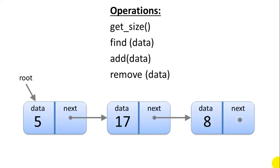Some of the operations we want to do on our linked list: get size, find data, add data, and remove data. Get size is really simple — we're going to keep a variable in our linked list that tracks the size of the list, so we'll simply return the size variable.